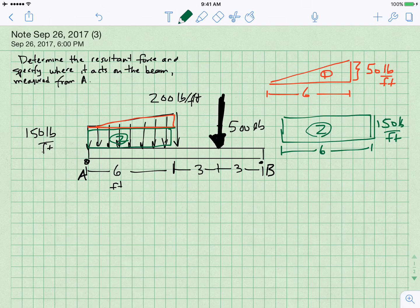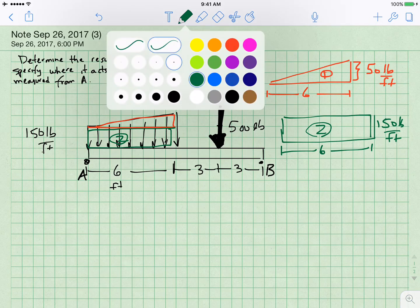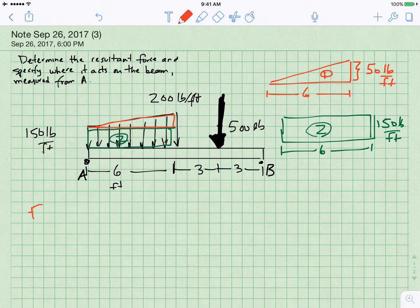So the resultant force for area one is going to equal one half the base times the height. So you have one half times six feet times the height of 50 pounds per foot. That makes 150 pounds.